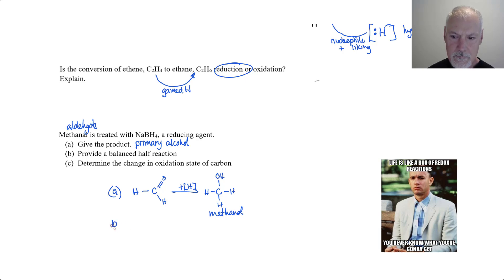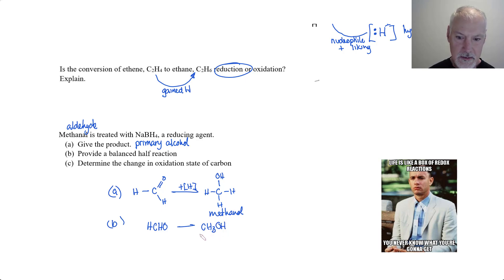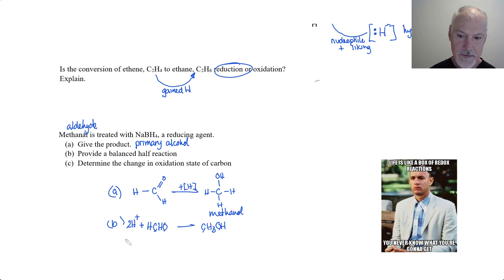Part B: provide the balanced half reaction. The formula for methanal is CHO — that's the condensed formula. And methanol is CH₃OH. To balance this, the first thing I look at is the carbons — there's one each. Look at the oxygens — there's one each. Now I need to balance the hydrogens by adding H⁺, so I would add two H⁺ to balance that. And now I balance the charge by adding electrons — so this side would get two electrons. That would be the reduction half reaction.